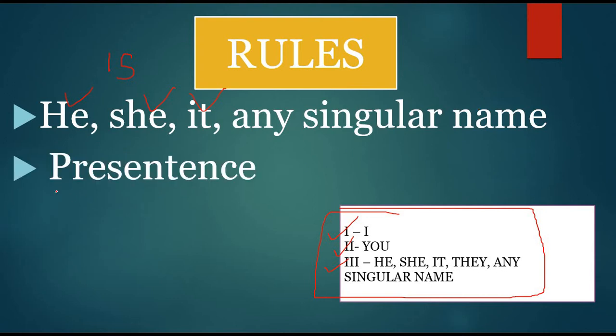And second rule is it can be used only in present tense. Only when you are talking about present tense, then only you can use this 'is'. If you do not follow any of these rules, then your sentences will become grammatically incorrect. That is why you should follow these two simple rules when you are making sentences using 'is'.